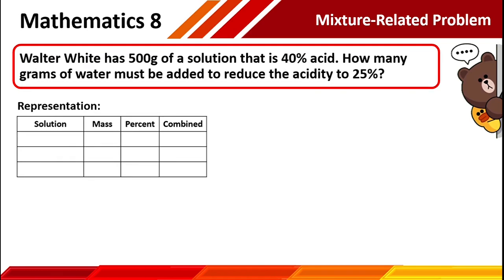Let's have number 2. Walter White has 500 grams of a solution that is 40% acid. How many grams of water must be added to reduce the acidity to 25%? Let's identify the solutions involved: we have Walter White's solution and water. The mass of Walter White's solution is 500 grams, and the concentration of acid is 40%. When we multiply mass and concentration, we get 20,000. For the water, the mass is unknown, so that will be our variable x. The acidity level of water is 0%, therefore when we combine the mass of water and its acidity, we will have 0x.